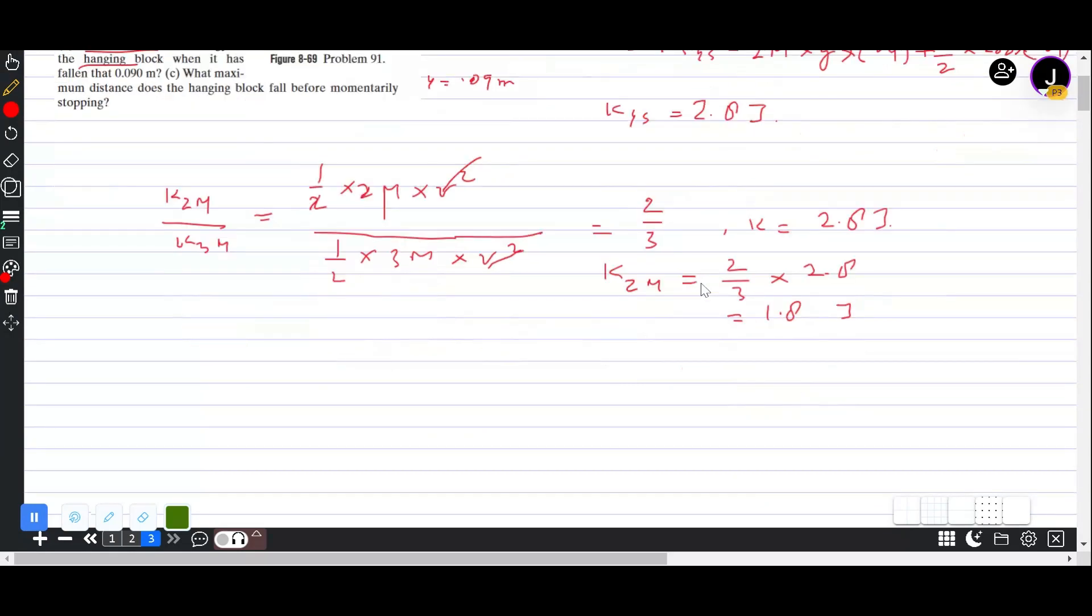Now, next one is what maximum distance does the hanging block fall before momentarily stopping? Now again, the same scenario appears. We have Ui plus Ki is equal to K system plus U system. So presuming at this point we have fallen by distance d.